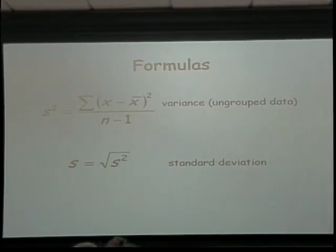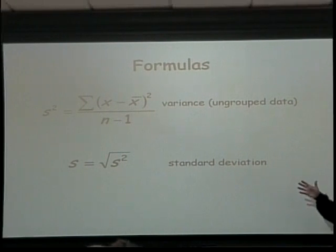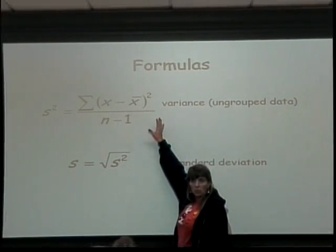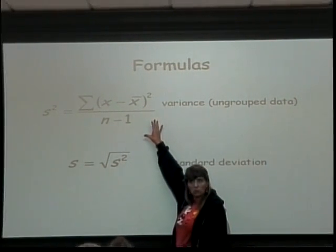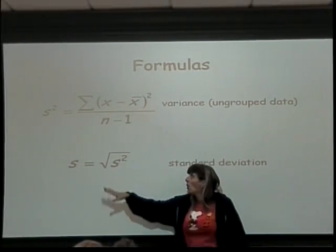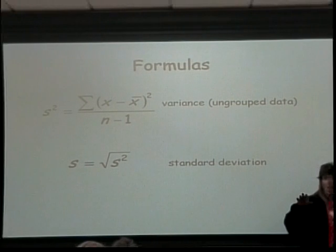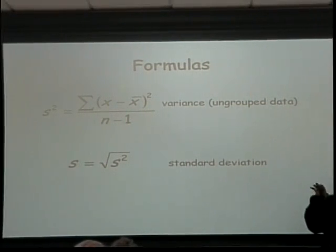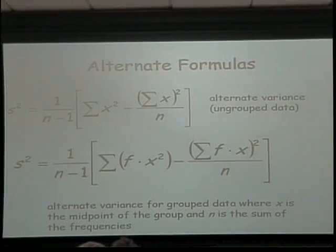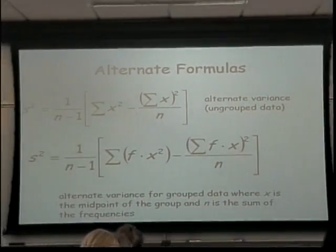Here's the formulas. This is not fun — just showing them to you. This is something called variance, which we don't deal with in this class at all. The square root of the variance is where you get your standard deviation. That's why sometimes you see S squared in your calculators. They'll give you those, but we don't need those. Here are the alternative formulas if your data is grouped. We're not doing anything but the calculators.